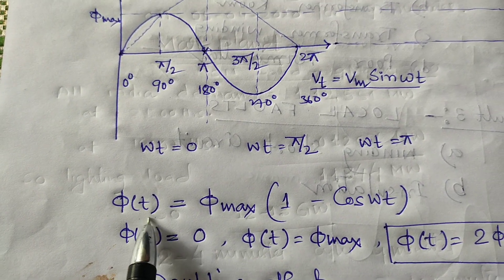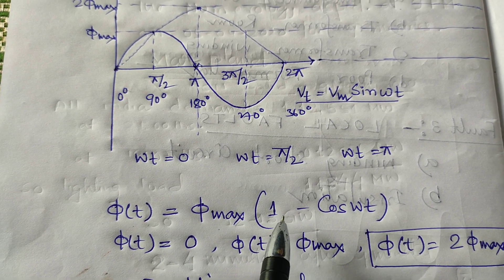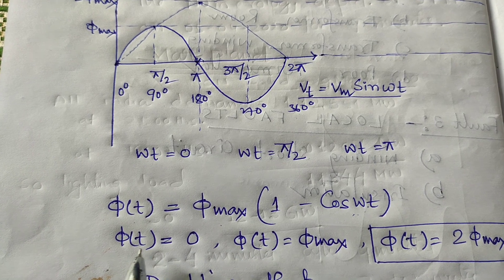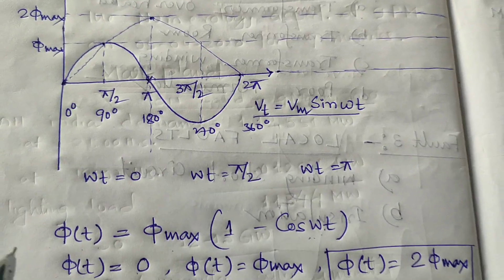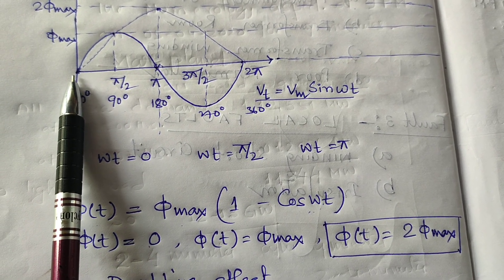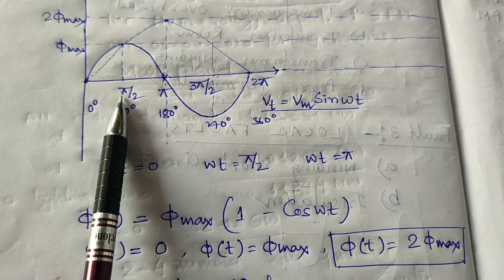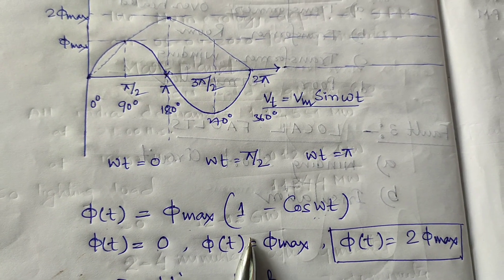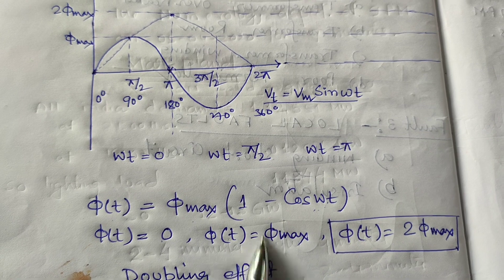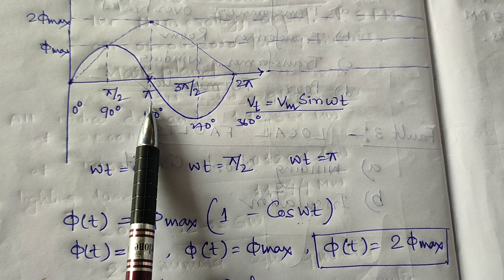At 180° (π), if we consider φ(t) = φmax(1 − cosωt), substituting t = 0 gives cos(0) = 1, so φ(t) = 0 — the flux is zero at the initial position because the transformer is not yet charged. At 90° (π/2), cos(90°) = 0, so we get the maximum flux φmax. When we reach 180° (π), we obtain the maximum value of two times the maximum flux.